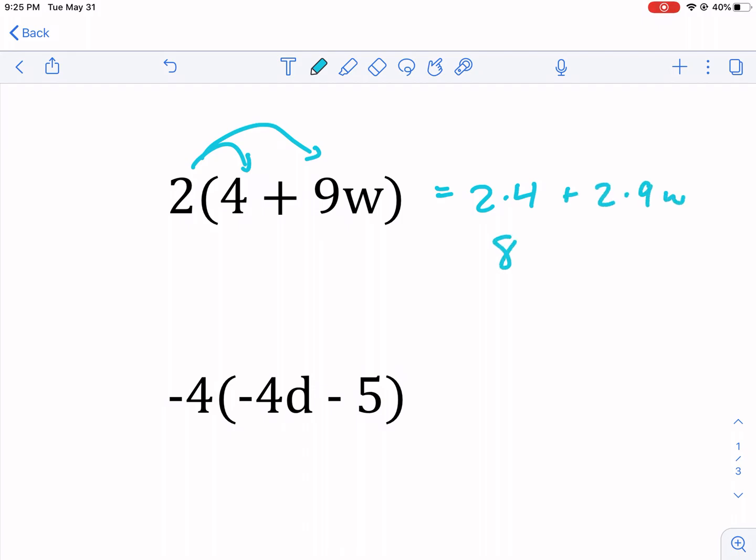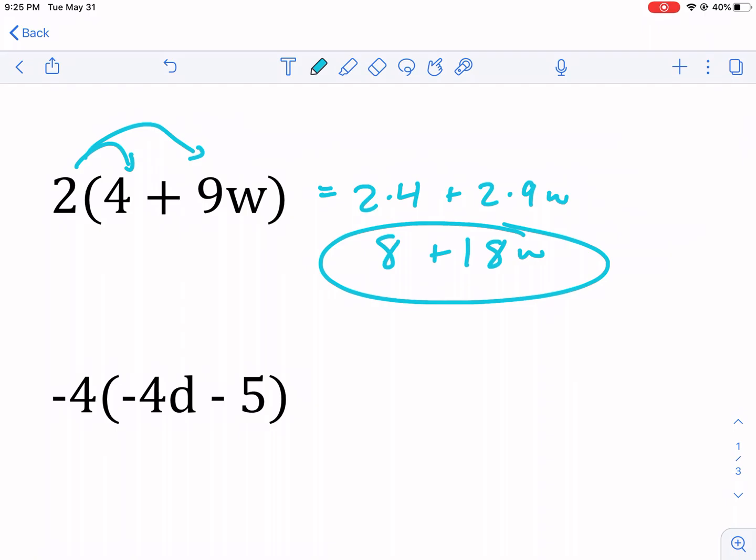We get 8 for that result. Then we get 18w for that result. And that's as simple as it can be. So we circle our answer, 8 plus 18w. And that's it. That's our answer.